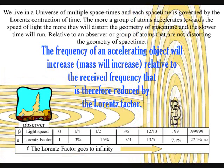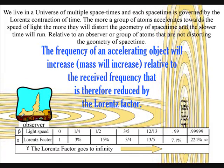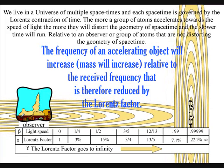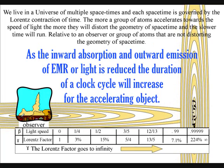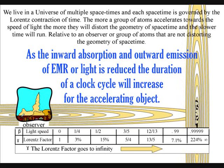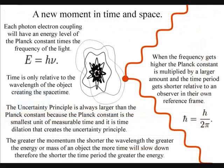The frequency of an accelerating object will increase relative to the received frequency, that will therefore be reduced by the Lorentz factor. As the inward absorption and outward emission of electromagnetic radiation is reduced, the duration of a clock cycle will increase for the accelerating object, and time will be measured to run more slowly in that reference frame.